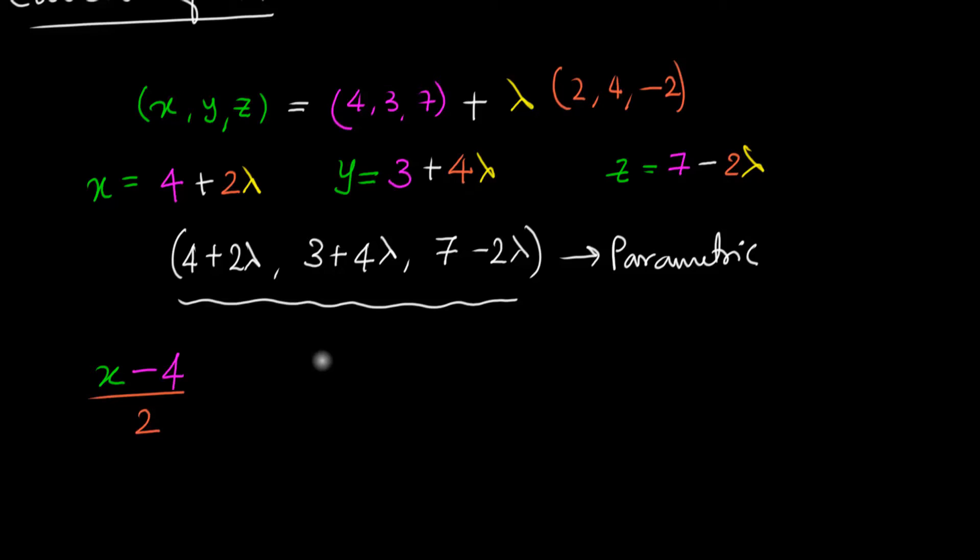lambda is just y minus 3 divided by 4. And similarly, from the last equation, I get lambda equals z minus 7 divided by minus 2. And guess what?